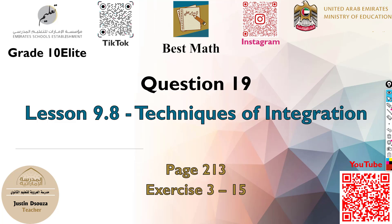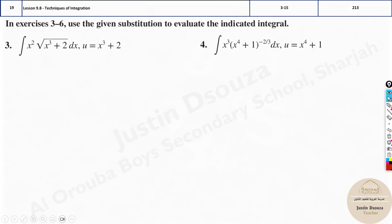Question 19 is on techniques of integration. Here you have been given questions and sometimes you have been given what the u value is. All the problems are u-substitution, but sometimes u is not given and you need to assume it. Whenever u is given, it's simple and easy.